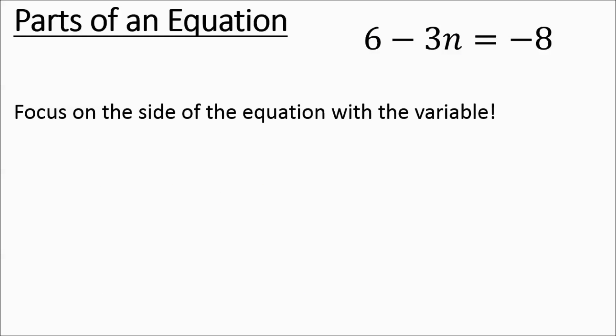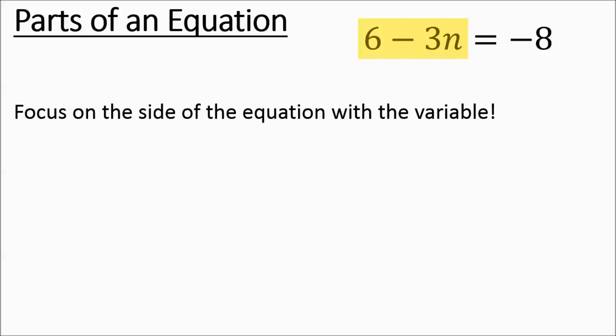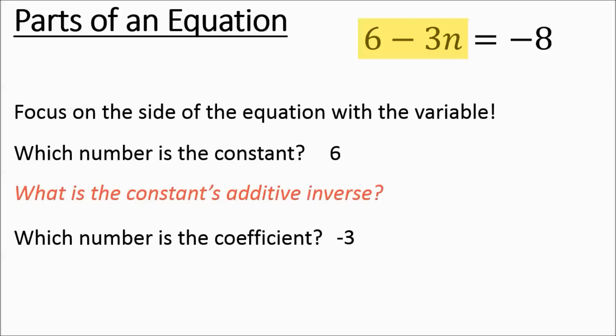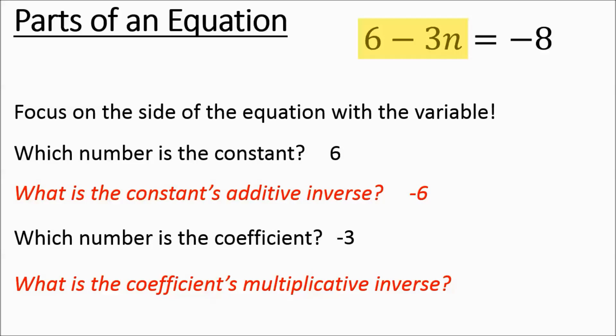This time we're going to tune into the left side of the equation, and the constant, which appears first, is a 6. The coefficient is going to be the negative 3. The additive inverse of 6 is going to be negative 6 — you just take the opposite of that constant. The multiplicative inverse of negative 3 is going to be negative 1 third. The negative stays when doing multiplicative inverse — if the coefficient was negative, the multiplicative inverse is still going to be negative; you just take its reciprocal.